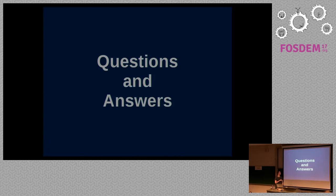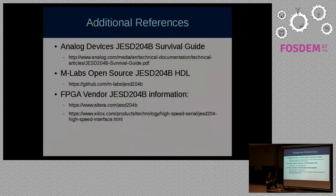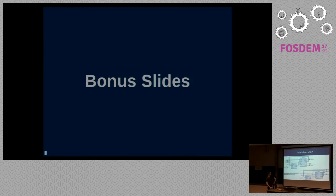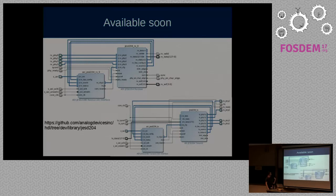Question: Are there any open cores for interfacing with JESD204B on FPGAs? Yes — there's the MLabs open-source implementation of the JESD204B core, written in Migen, which is a Python-like special HDL language. Additionally, we have been working on a complete transmit and receive core implemented in an FPGA vendor-independent way, which will appear on our GitHub repository within the next two weeks.